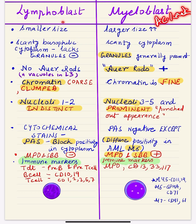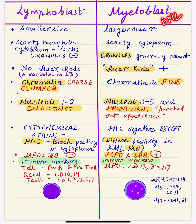The lymphoblasts are increased in number and proliferate in the bone marrow in case of acute lymphoblastic leukemia, while the myeloblasts proliferate in the bone marrow in case of acute myeloid leukemia. This comparison is very important for exams, so you should know the differences between these two cells — myeloblast and lymphoblast. So let's start.